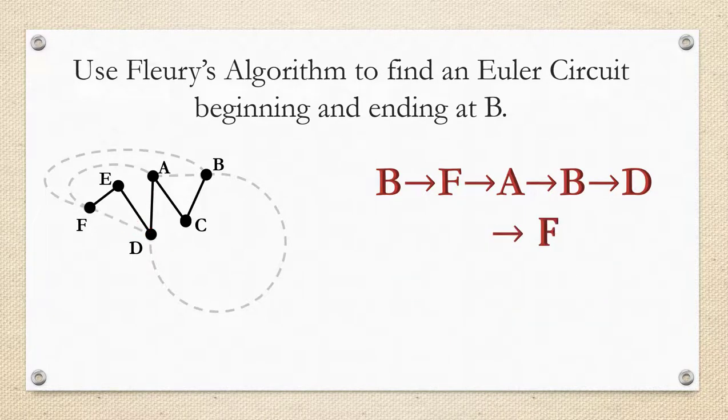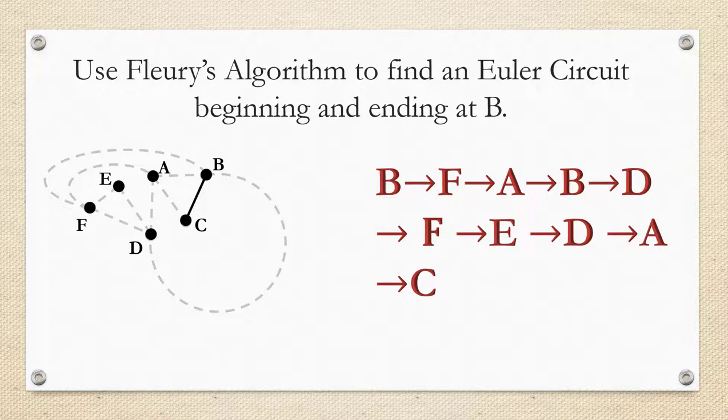So from D we go to F. We make a note of it and we remove the edge and then now we're at F. Now at F there's no option except going to E. So we're going to E, removing that and making a note of it. Now from E we have no choice but to go to D and then we have to go to A, we have to go to C next and then we have to go to B next. So we found our Euler circuit that begins and ends at the vertex B.